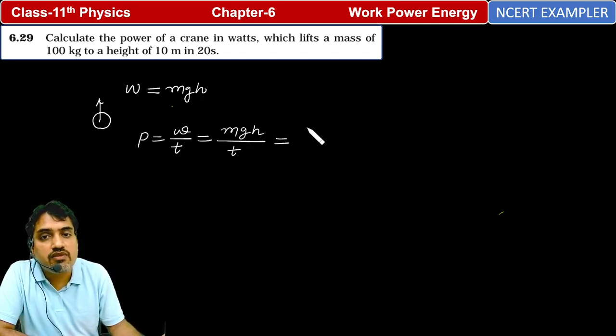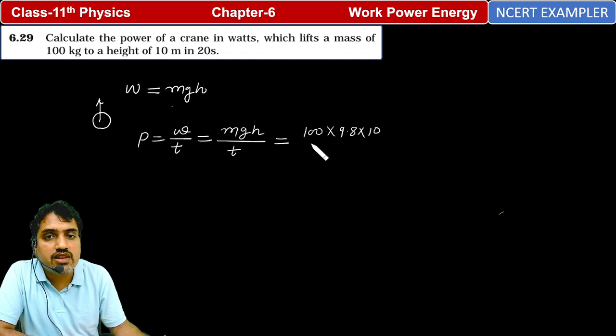Okay, m value is given as 100, g value we have as 9.8, h value is given as 10, divided by 20 seconds.